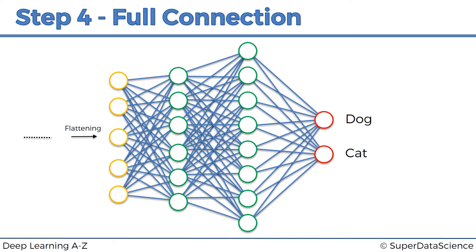Now let's look at the interesting part: how do these two output neurons work? Before, we've always had one output neuron. The main purpose is to understand what weights to assign to all the synapses connecting to the dog neuron, so we know which of the previous neurons are important for the dog. Hypothetically, we've got numbers in our previous layer — in the final fully connected layer. These numbers can be absolutely anything, but for argument's sake let's agree we're looking at numbers between zero and one.